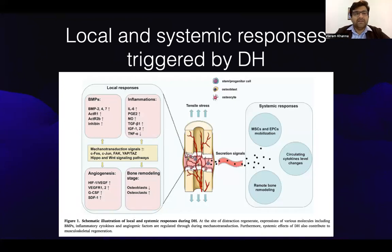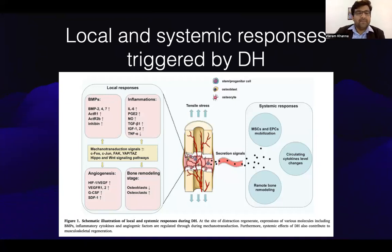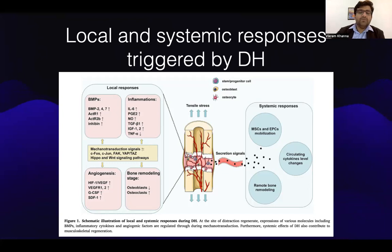Coming to the local and systemic responses triggered by distraction histogenesis: these responses are mainly triggered by mechanotransductional signals like C4, C1, FAK, and YAP signaling pathways, which cause BMPs, inflammatory markers, and angiogenesis markers to increase. Along with these local responses, systemic responses also occur — MSCs and EPCs are mobilized, circulating cytokine levels are changed, and remote bone modeling also increases.